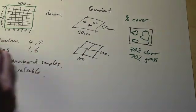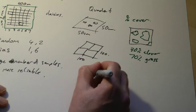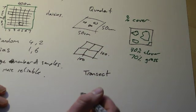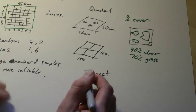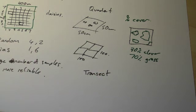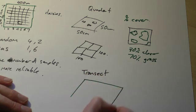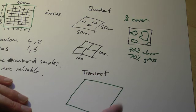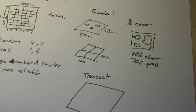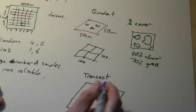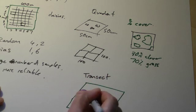One other technique is to use a transect. And this is basically a line. This is useful if you want to see how perhaps plants differ across an environment. If we take an example of something like, here's a field, but this time it's got a stream going through it.